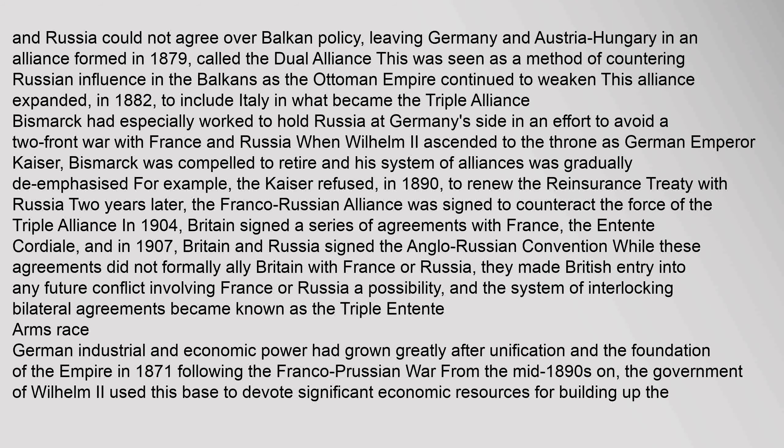Bismarck had worked to hold Russia at Germany's side to avoid a two-front war with France and Russia. When Wilhelm II ascended to the throne as German Emperor Kaiser, Bismarck was compelled to retire and his system of alliances was gradually de-emphasized. The Kaiser refused in 1890 to renew the reinsurance treaty with Russia. Two years later, the Franco-Russian alliance was signed to counteract the force of the Triple Alliance. In 1904, Britain signed a series of agreements with France, the Entente Cordiale, and in 1907, Britain and Russia signed the Anglo-Russian Convention. While these agreements did not formally ally Britain with France or Russia, they made British entry into any future conflict involving France or Russia a possibility, and the system of interlocking bilateral agreements became known as the Triple Entente.